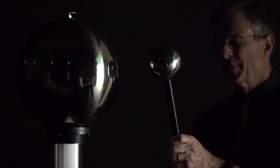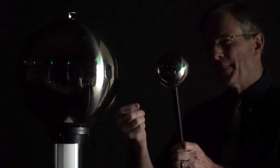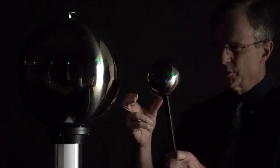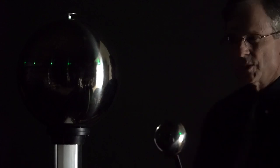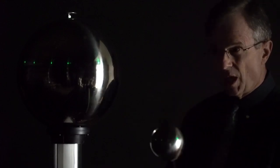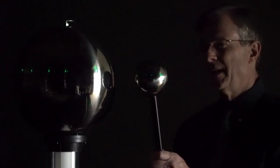So these arcs between the two spheres, like we said, that is an expression of dielectric breakdown between the two spheres. And actually what we're getting between them is a plasma. It's the fourth state of matter. Solid, liquid, gas, and then plasma is an ionized gas.